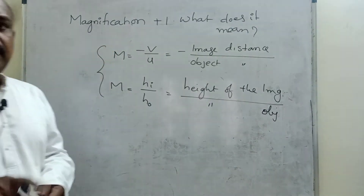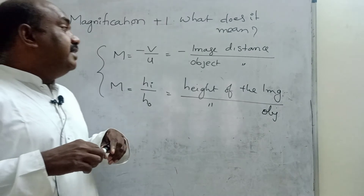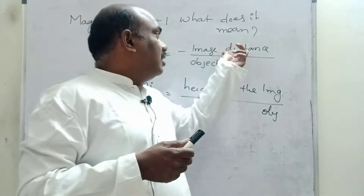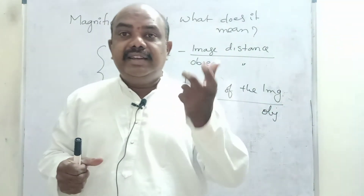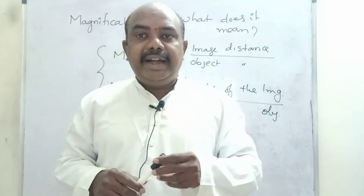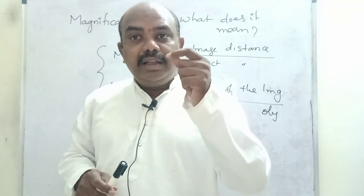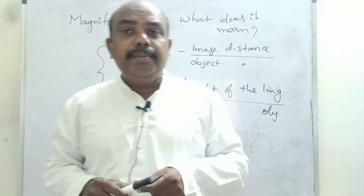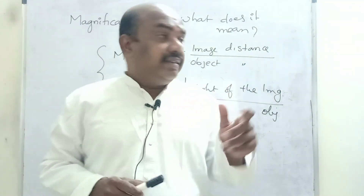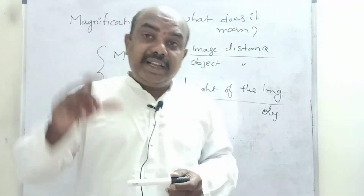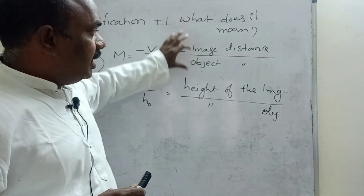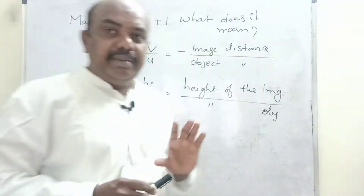Why do we get image distance in the numerator and object distance in the denominator? Because always image distance must be greater than object distance — then only we get a magnified image. If the numerator is greater than the denominator, then only we get a magnified image. Otherwise, if object distance is in the numerator, we get a diminished image. So, image height or image distance must always be in the numerator, and object distance or object height must be in the denominator.